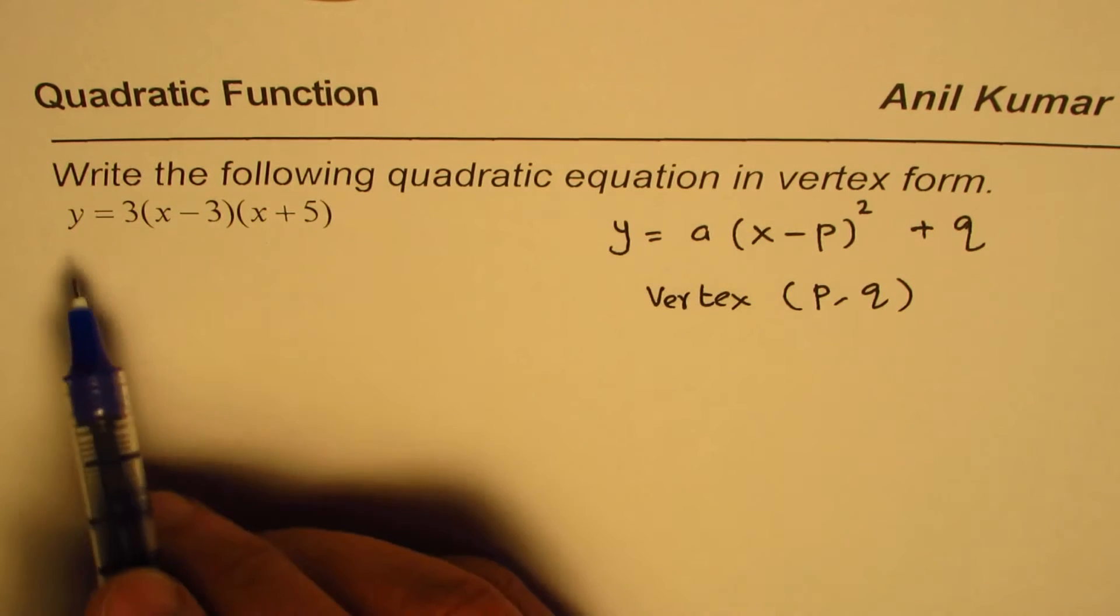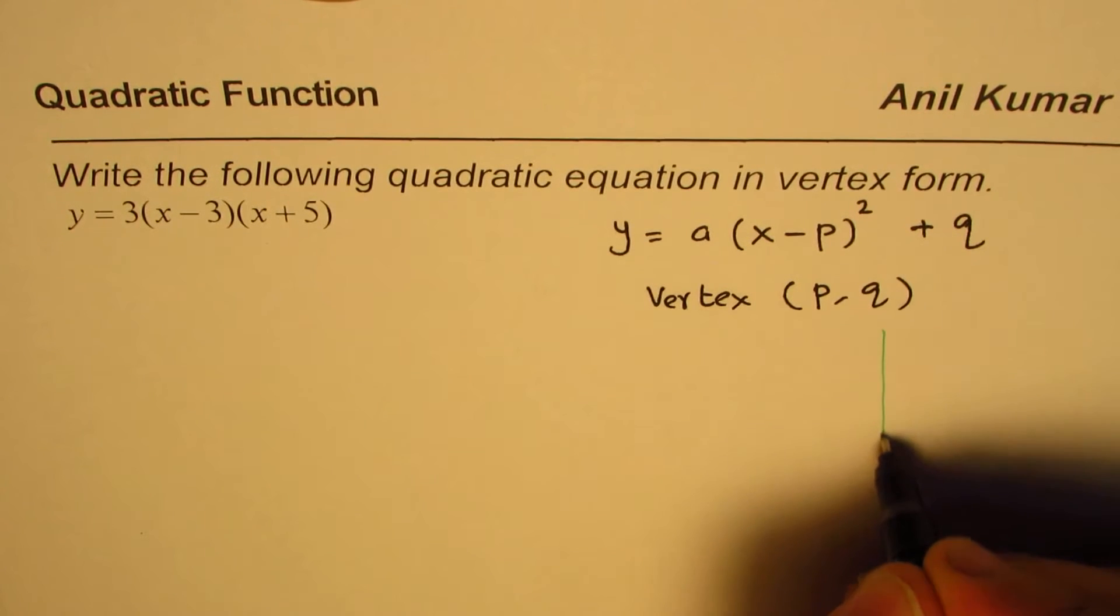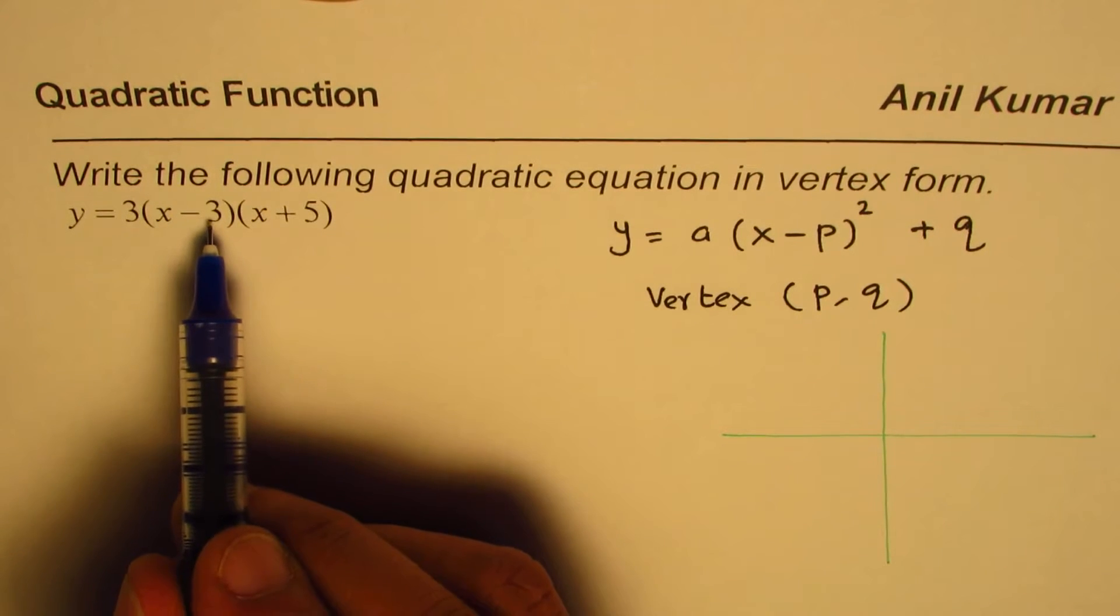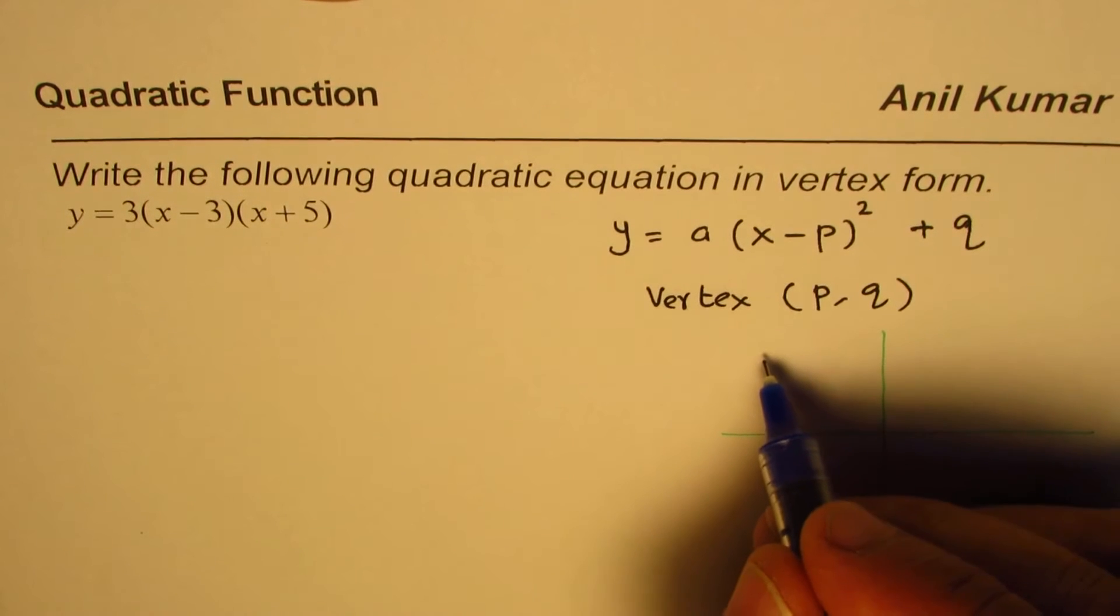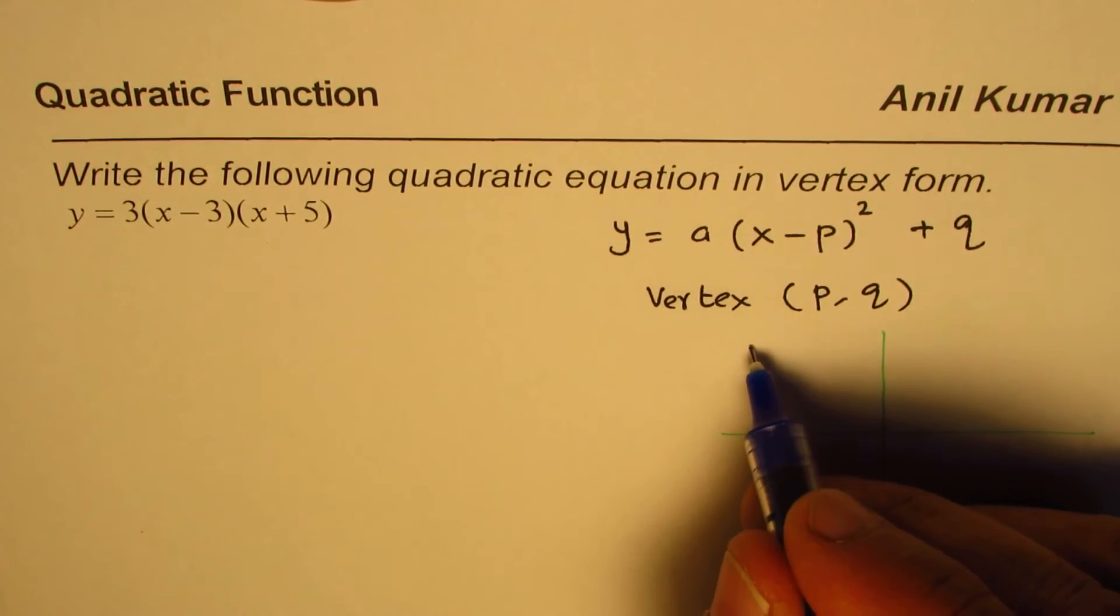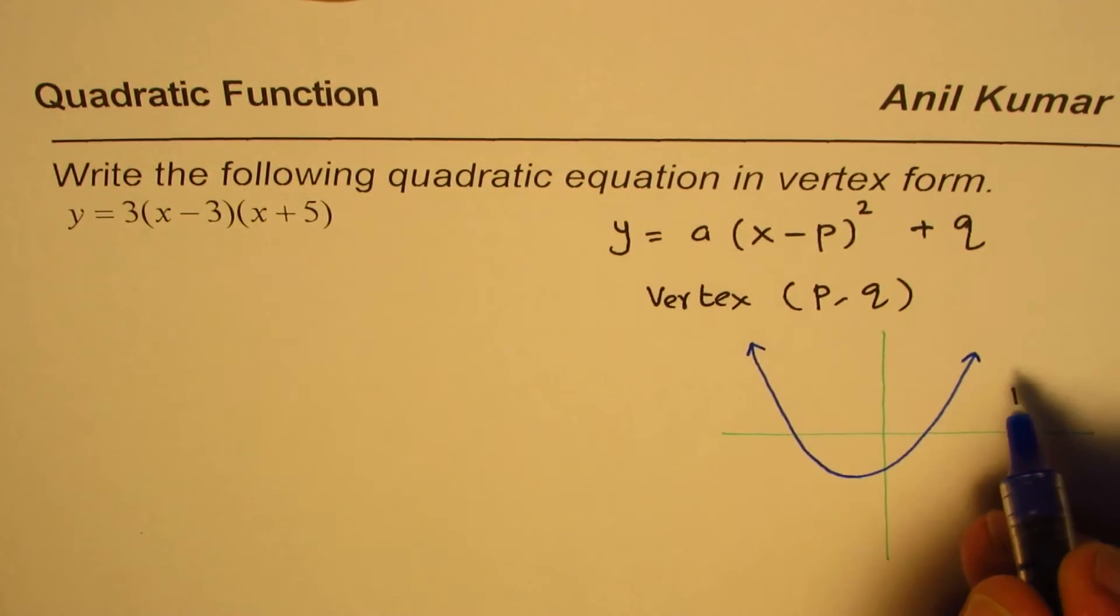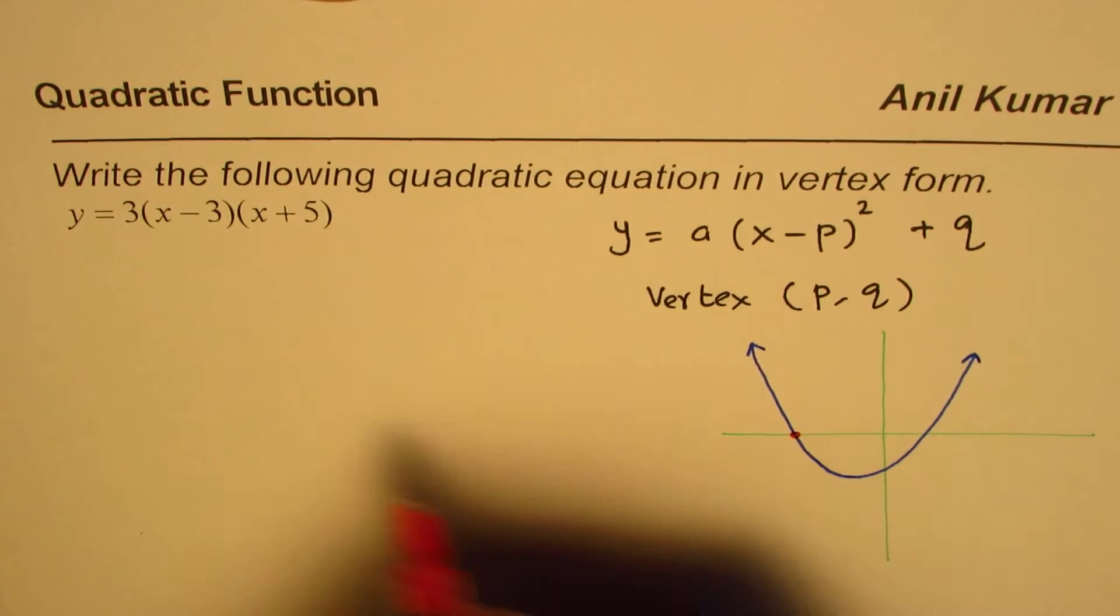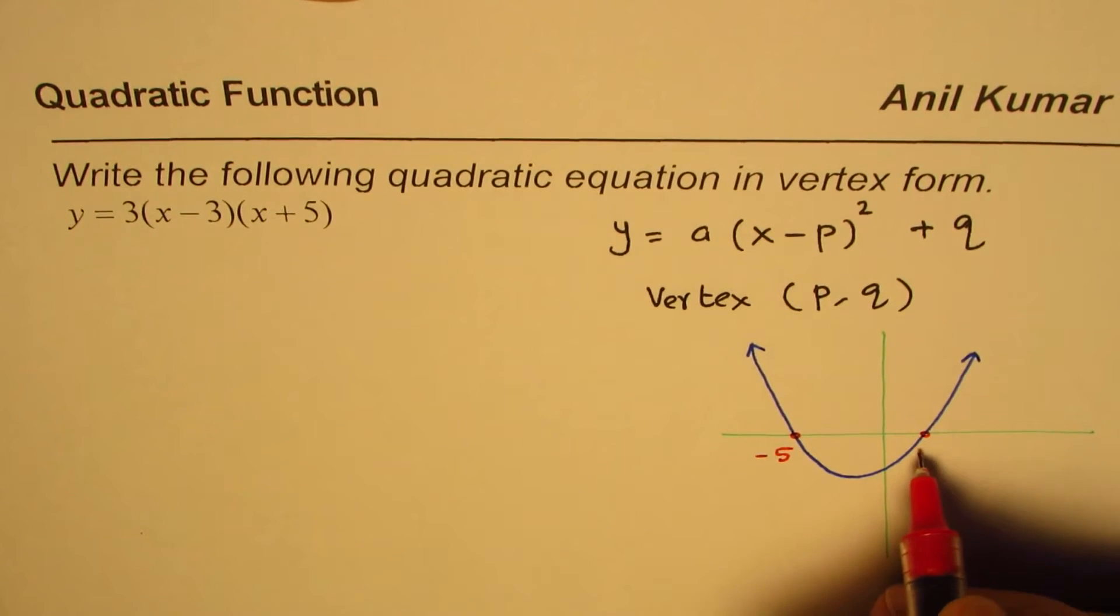Let me first make you understand what this form is. So in intercept form, how does that help? That gives you intercepts at 3 and minus 5. So a parabola which is opening upward, since the x coefficient is positive, could be drawn kind of like this with a happy face up, and this parabola will have two x-intercepts, one will be at minus 5, the other one will be at 3.